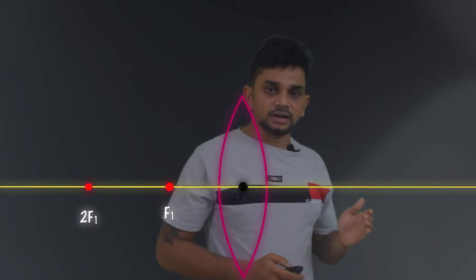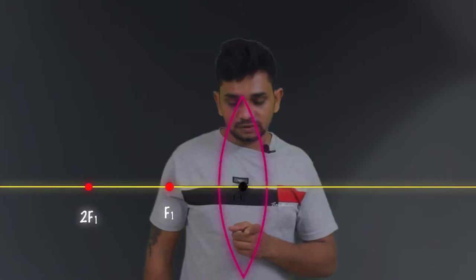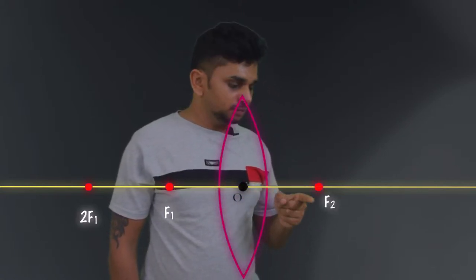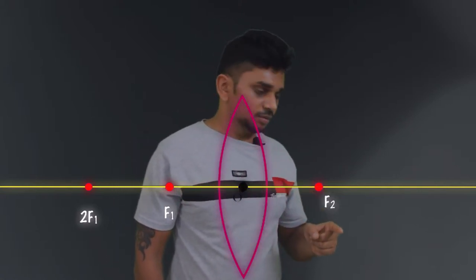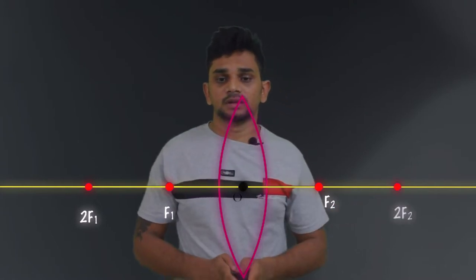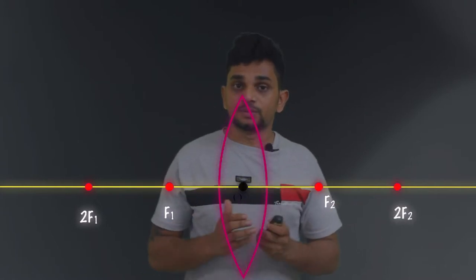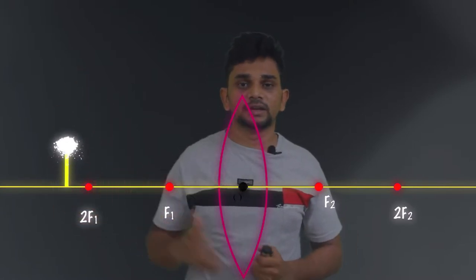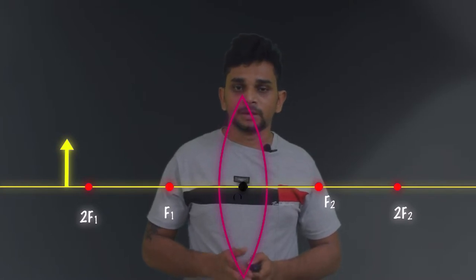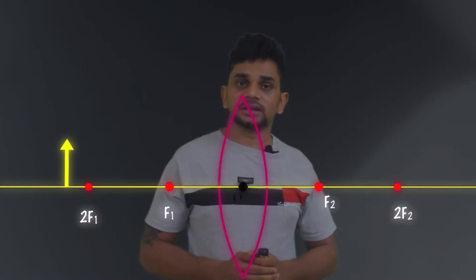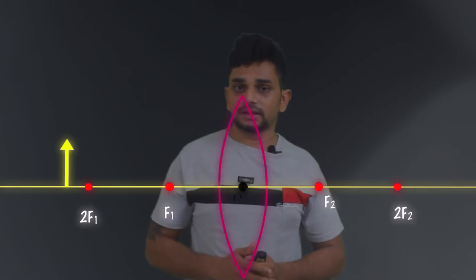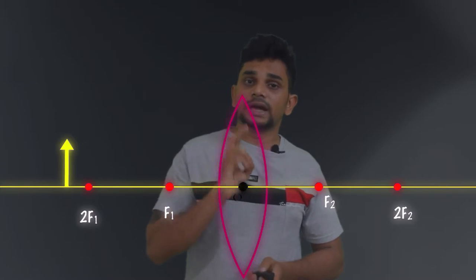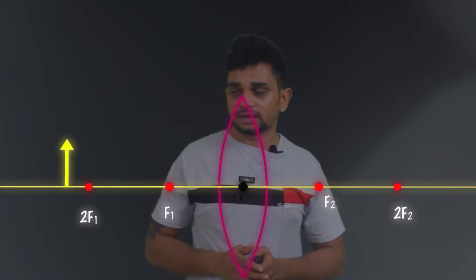On the other side, from the optic center we take 2 centimeters to mark F2, and another 2 centimeters to mark 2F2. The object is placed beyond 2F1. To draw a ray diagram, we need to consider two light rays.